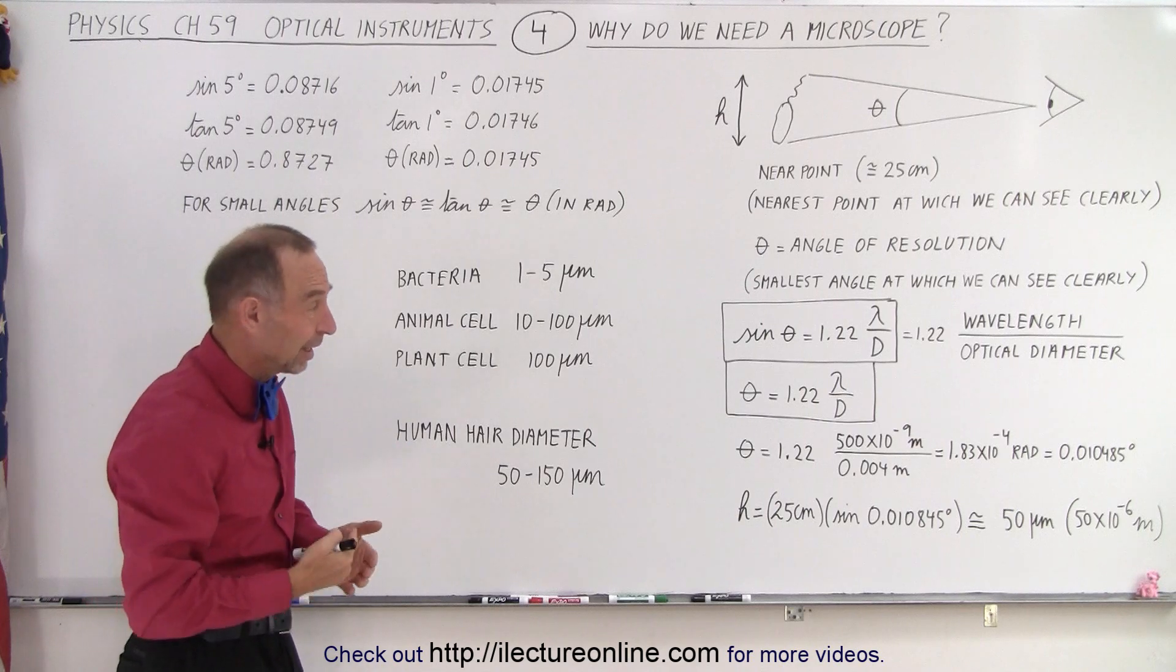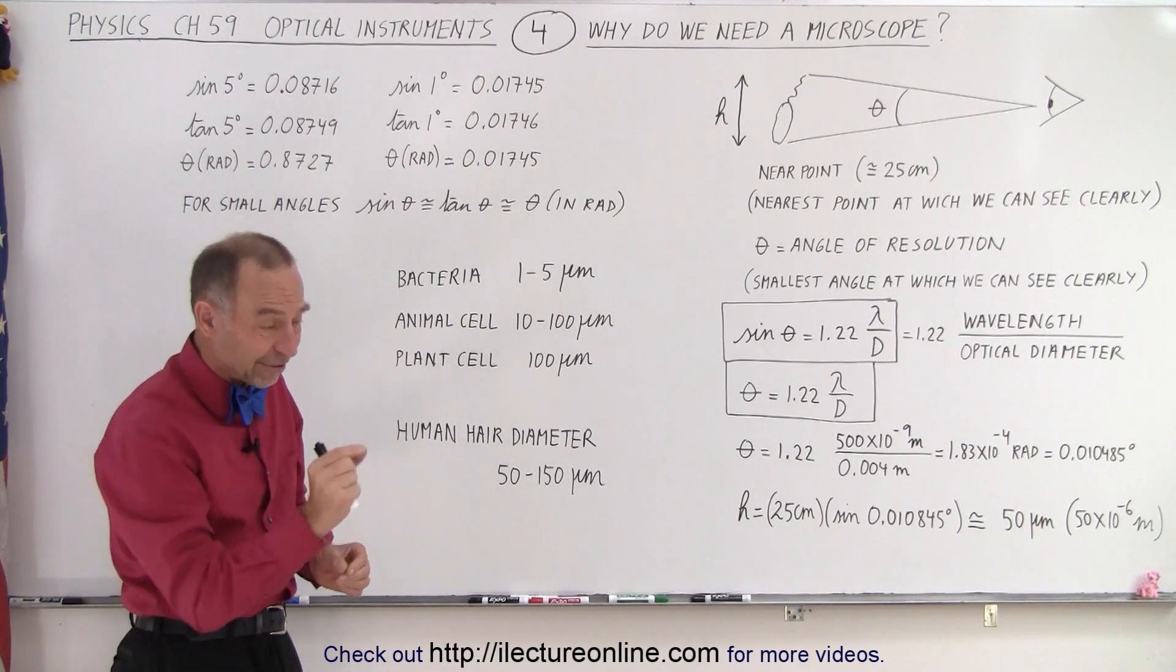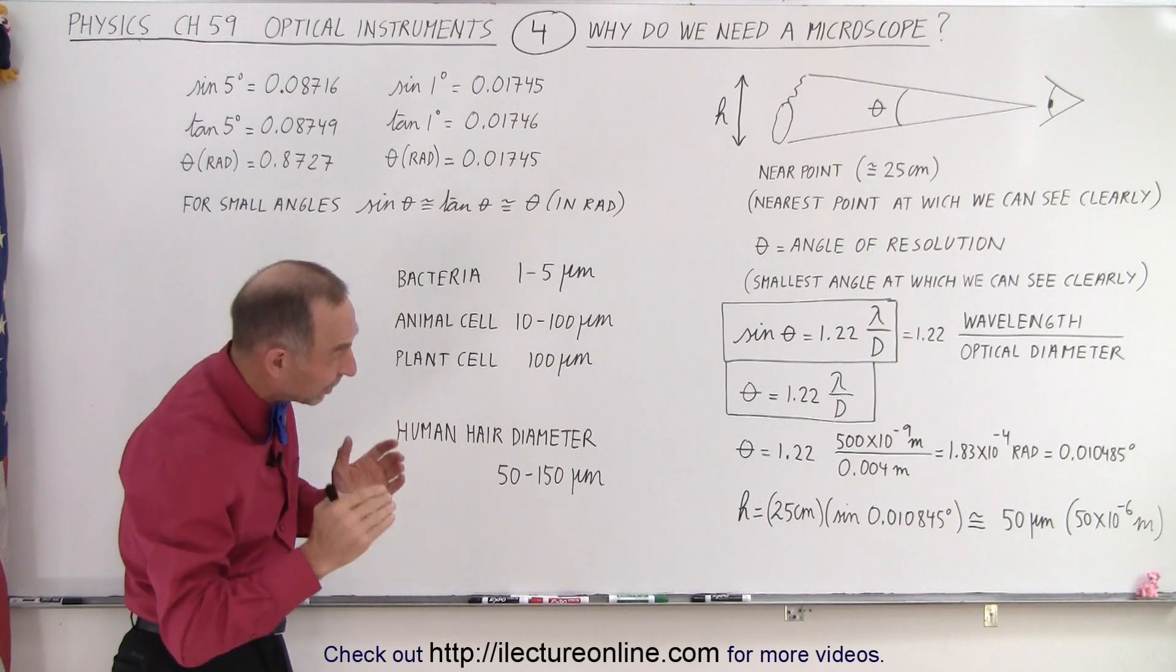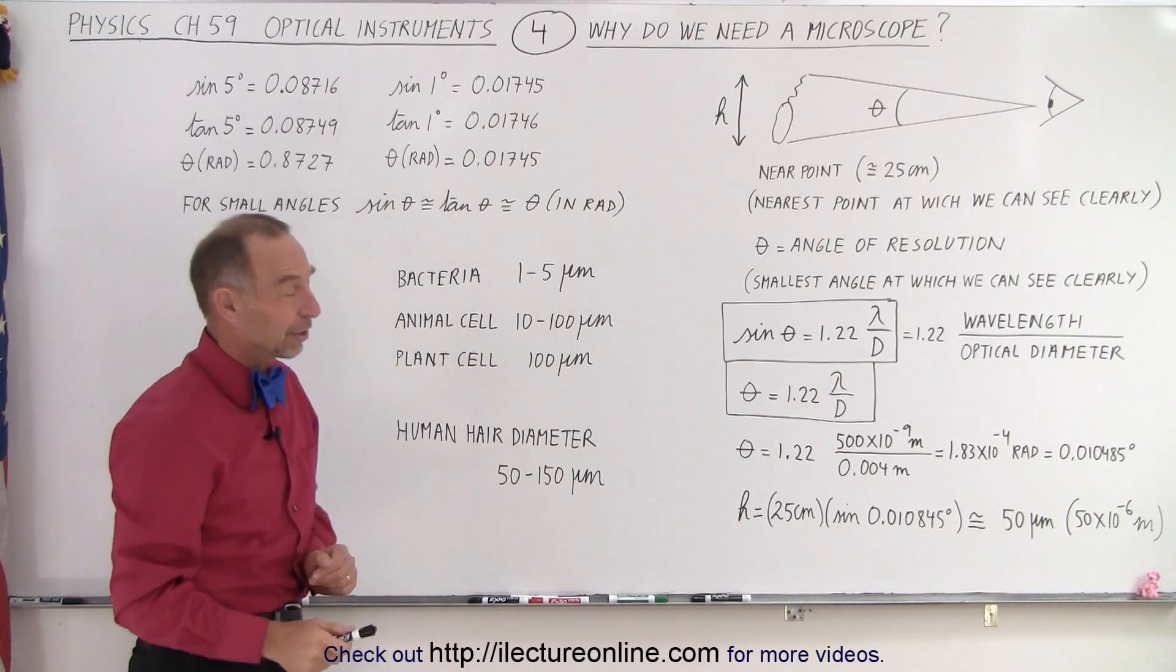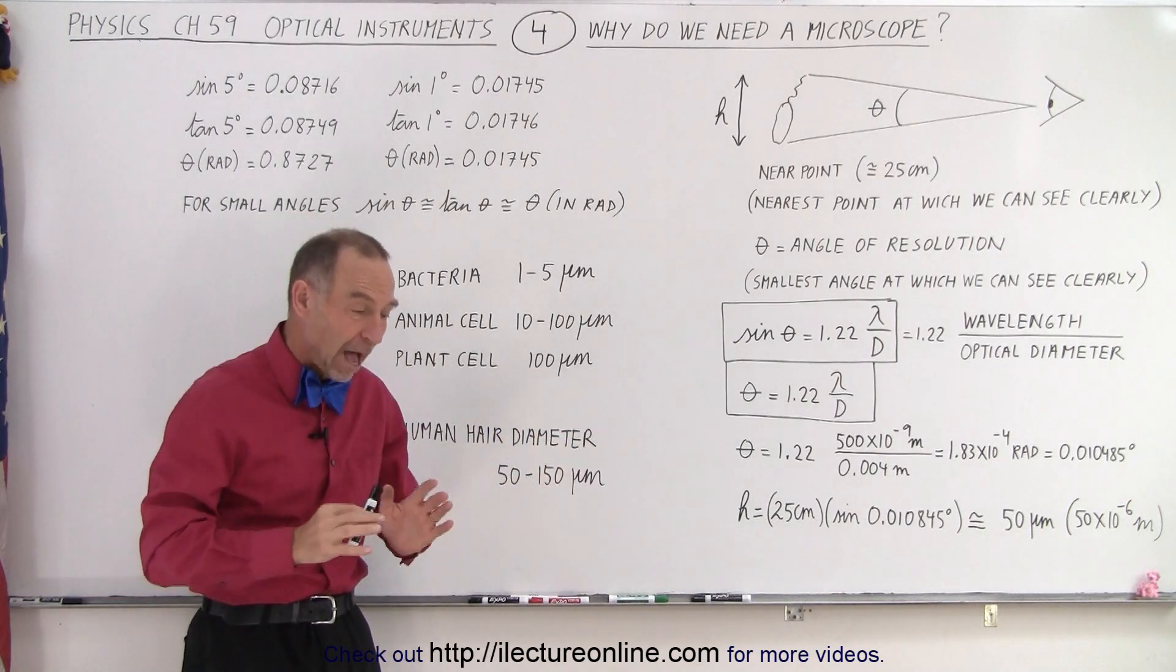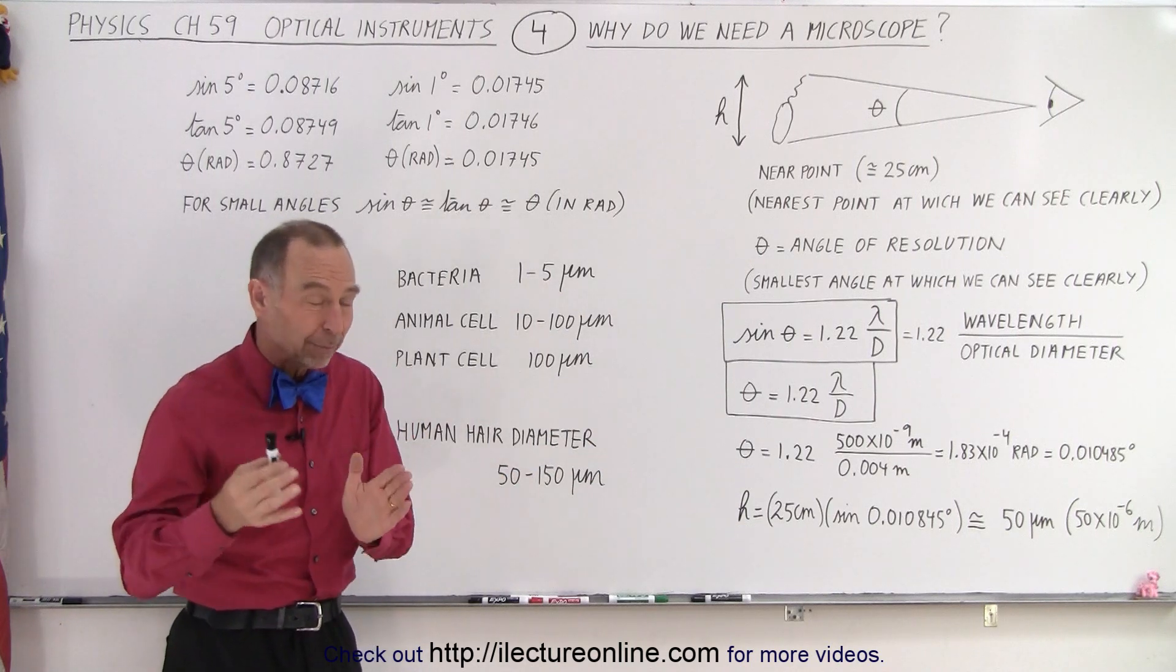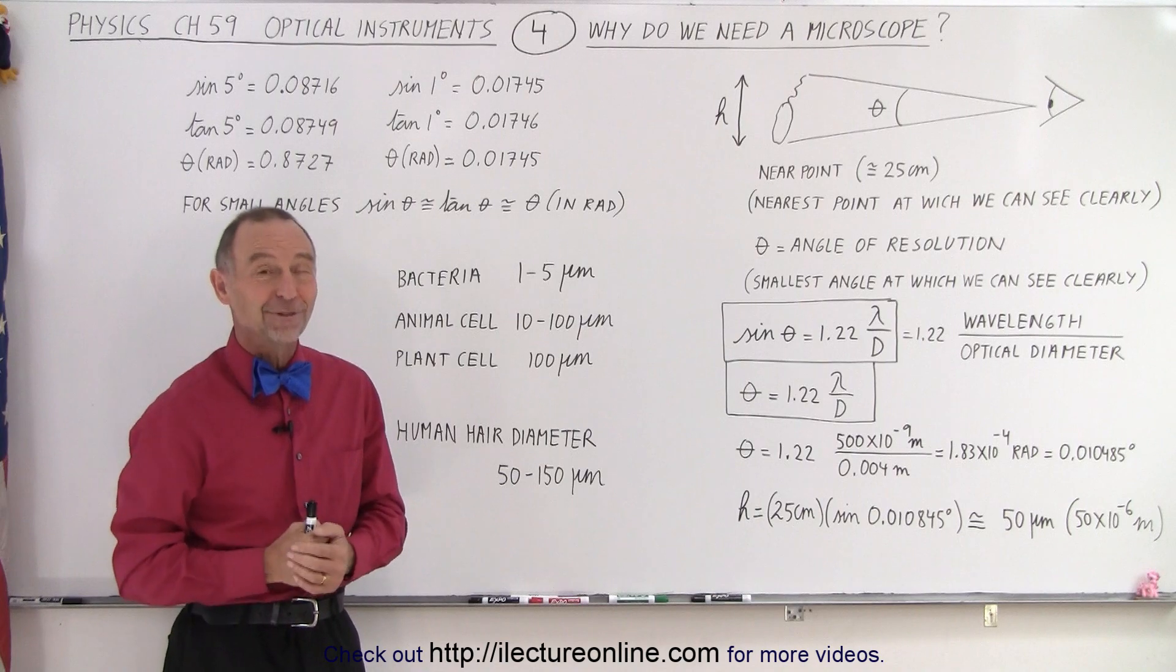So the human vision is actually quite remarkable in its structure and its capability of seeing very tiny things, but not good enough to see things such as bacteria or cell structures. And for that we do need a microscope, and so we're going to show you later on in the videos to come how microscopes work and why we're able to see much smaller things using microscopes. And that is how it's done.